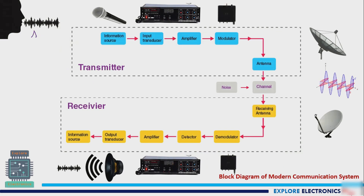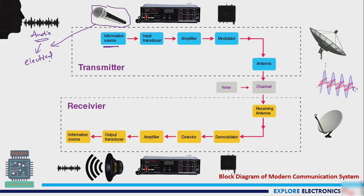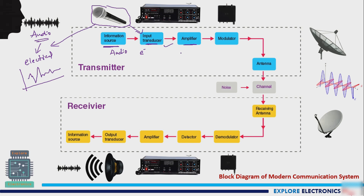Let us see the detailed diagram. We have an audio information source generated by a person. A microphone converts this audio into electrical form. The electrical signal at the output of the transducer — it is called a transducer because it converts audio into electrical form. This is given to an amplifier, which increases the strength of the signal: the amplitude via a voltage amplifier or the power via a power amplifier.